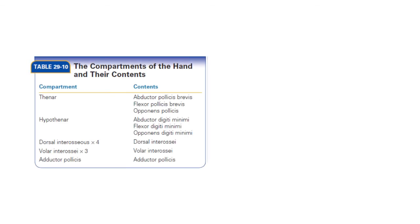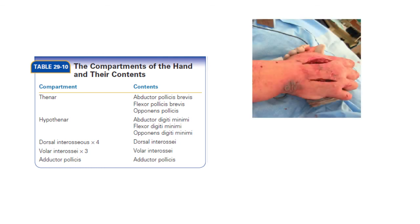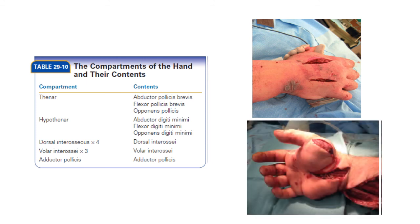There are 10 compartments in the hand: thenar and hypothenar form two compartments, dorsal and volar interossei form seven compartments, and the adductor pollicis forms the last compartment. For hand ACS, in addition to decompressing the carpal tunnel and Guyon's canal, two incisions are given along the second and fourth metacarpals on the dorsal aspect, and an incision over the thenar muscles on the volar aspect to decompress all compartments.